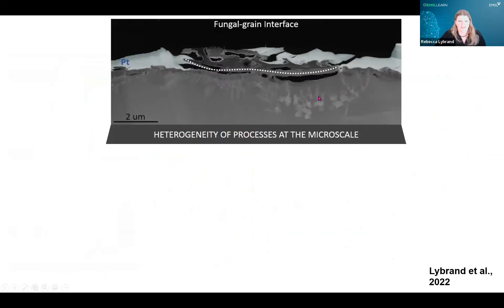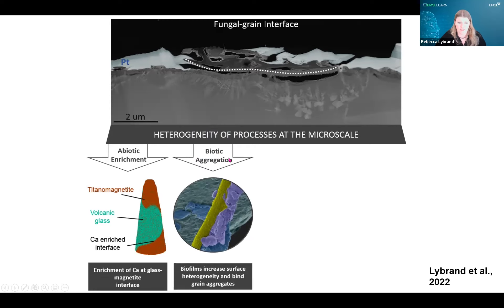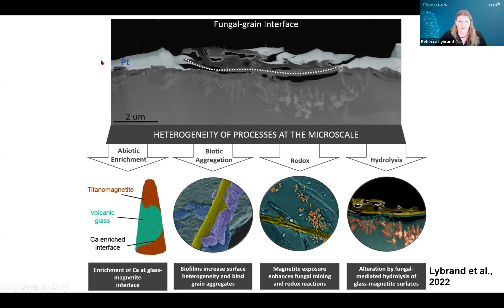In summary, this work demonstrated how heterogeneous processes are at the microscale, especially at fungal-grain type interfaces where we observed evidence for abiotic enrichment, potential incipient stages of biotic aggregation, and the exposure of iron-containing minerals on grain surfaces could be an important source of weathering moving forward. There's also this potential alteration layer and evidence for incipient weathering occurring directly at these fungal-grain contacts.